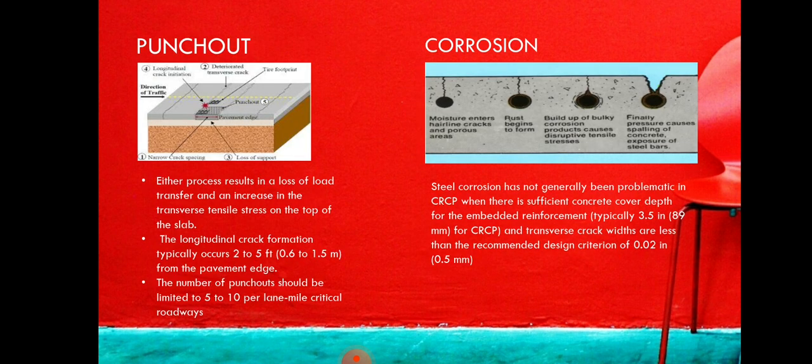The next distress type is punch out and corrosion. A punch out is defined as a block or wedge of CRCP delimited by two consecutive transverse cracks, a longitudinal crack, and the pavement edge. It results in a loss of load transfer and an increase in transverse tensile stress on top of the slab. Longitudinal crack formation typically occurs from 2 to 5 feet (0.6 to 1.5 meters) from the pavement edge. The number of punch outs should be limited to 5 to 10% per lane-mile on critical roadways.